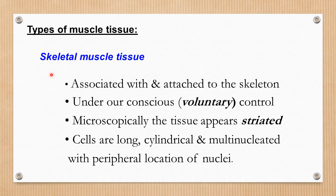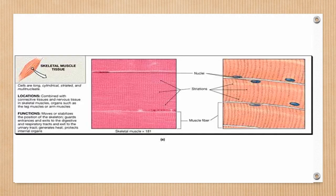Now let us look at the microscopic features of these muscles one by one. Number one, the skeletal muscle, which is attached to the skeleton and bone and brings about movements. These are voluntary movements, so these muscles are under conscious control and voluntarily controlled by the somatic nerves directly from the spinal cord. Microscopically these muscles appear striated — they are long, cylindrical, and multinucleated with peripheral location of nuclei. Histologically you can see elongated non-branching cylindrical muscle fibers which are multinucleated, and cross striations produced by overlapping light and dark bands of actin and myosin contractile filaments.